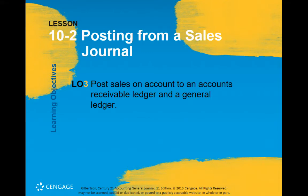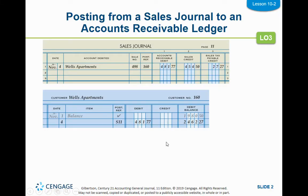This video is going to be short and sweet because it's about posting, and you've been posting for a while. In your sales journal, every line should have a customer number or customer name on there, and you're going to post only the amounts in the accounts receivable debit column to the accounts receivable ledger. It's the only thing you post individually.